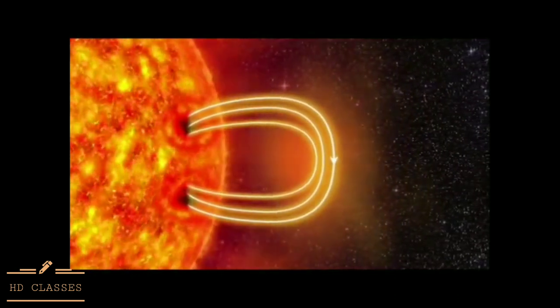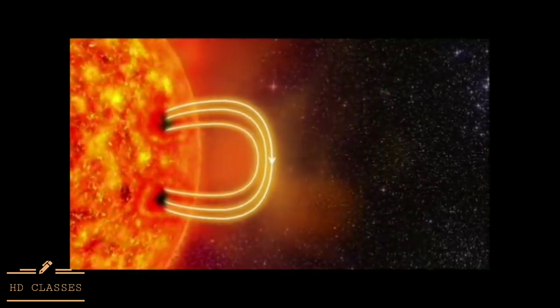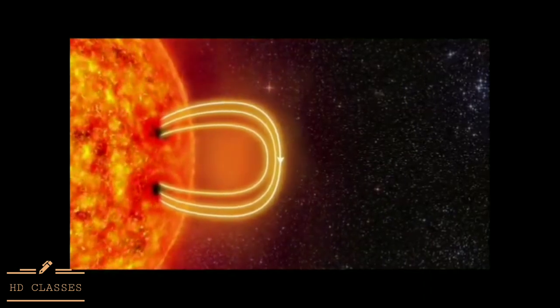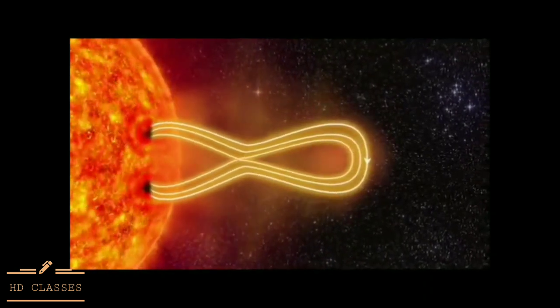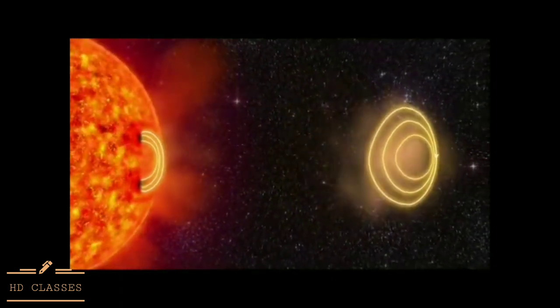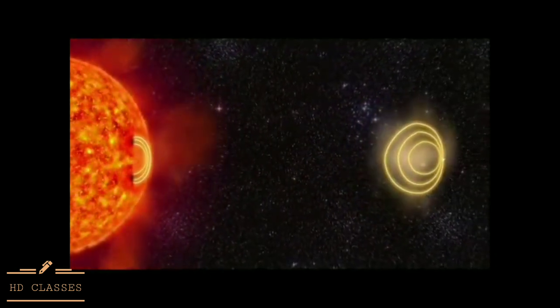The electrically charged gas is called plasma. The plasma drags the magnetic field further outwards. The magnetic field stretches and twists like a rubber band, and then the rubber band breaks. Several billion tons of plasma is hurled out from the Sun. This is called a solar storm.